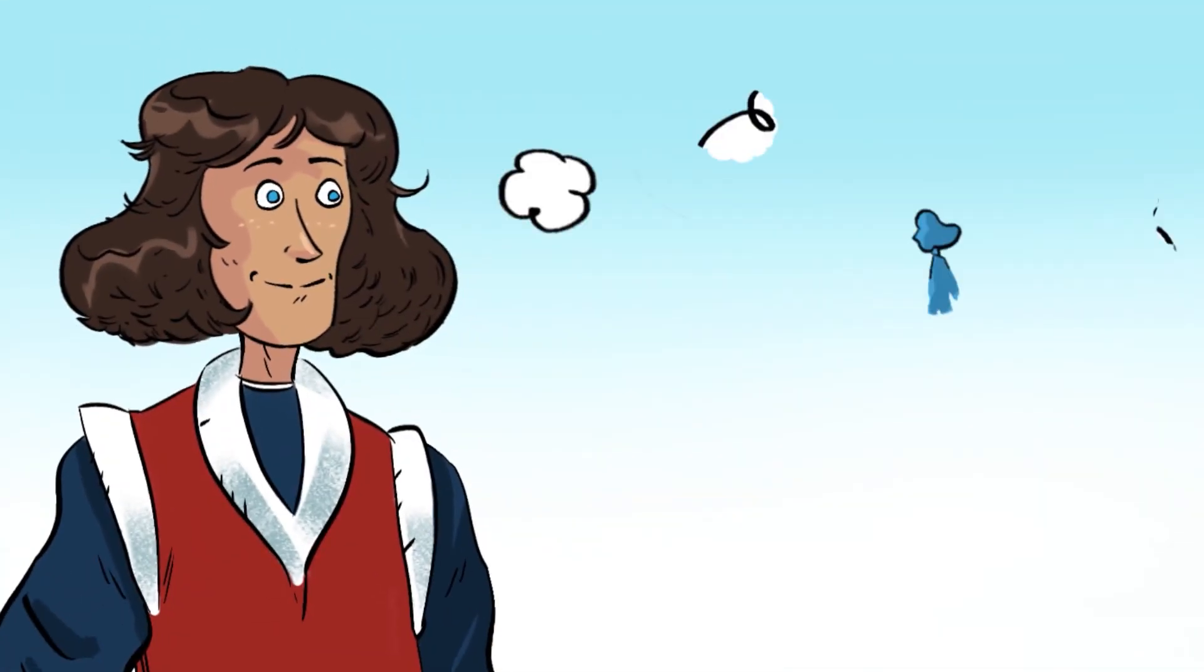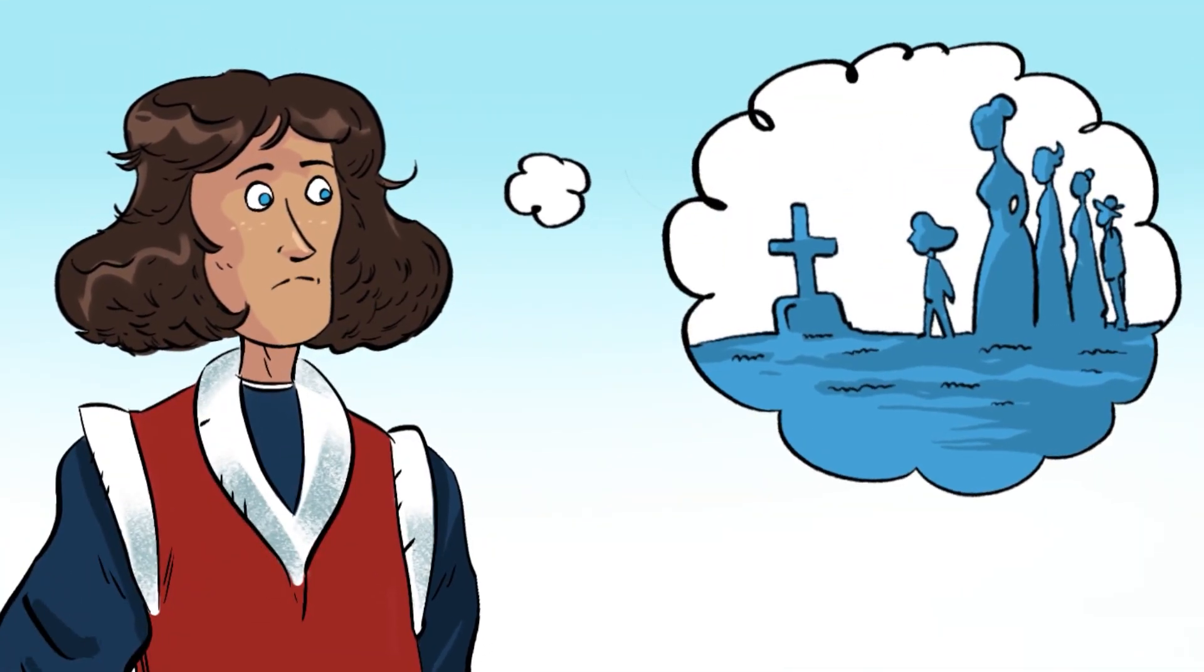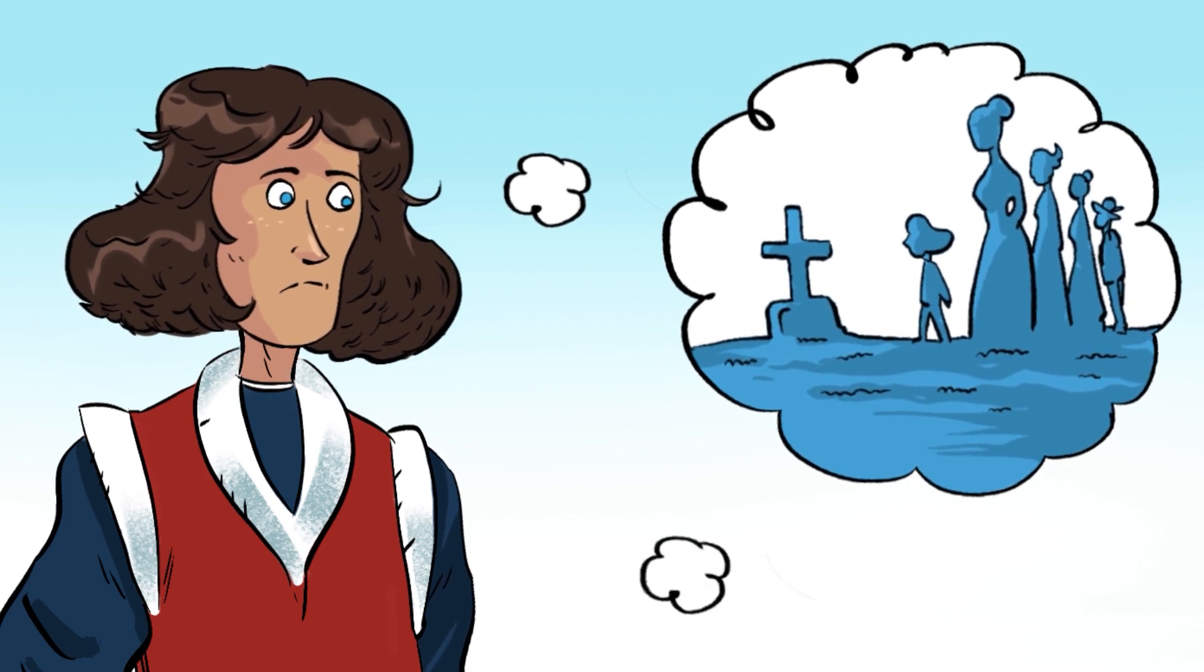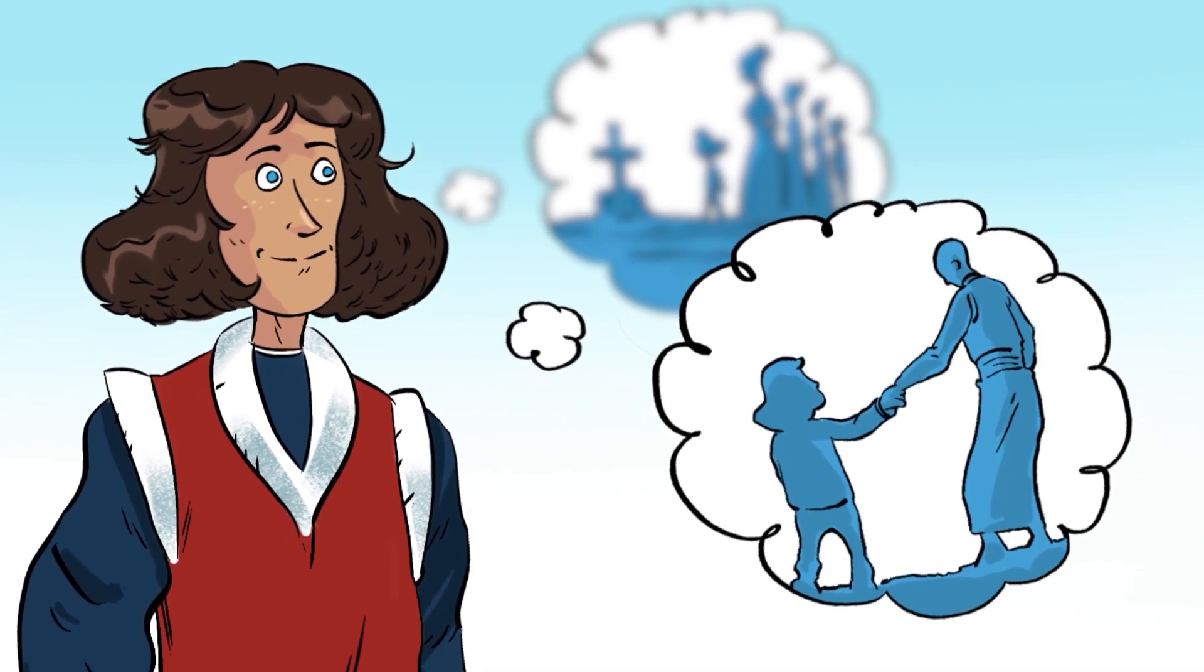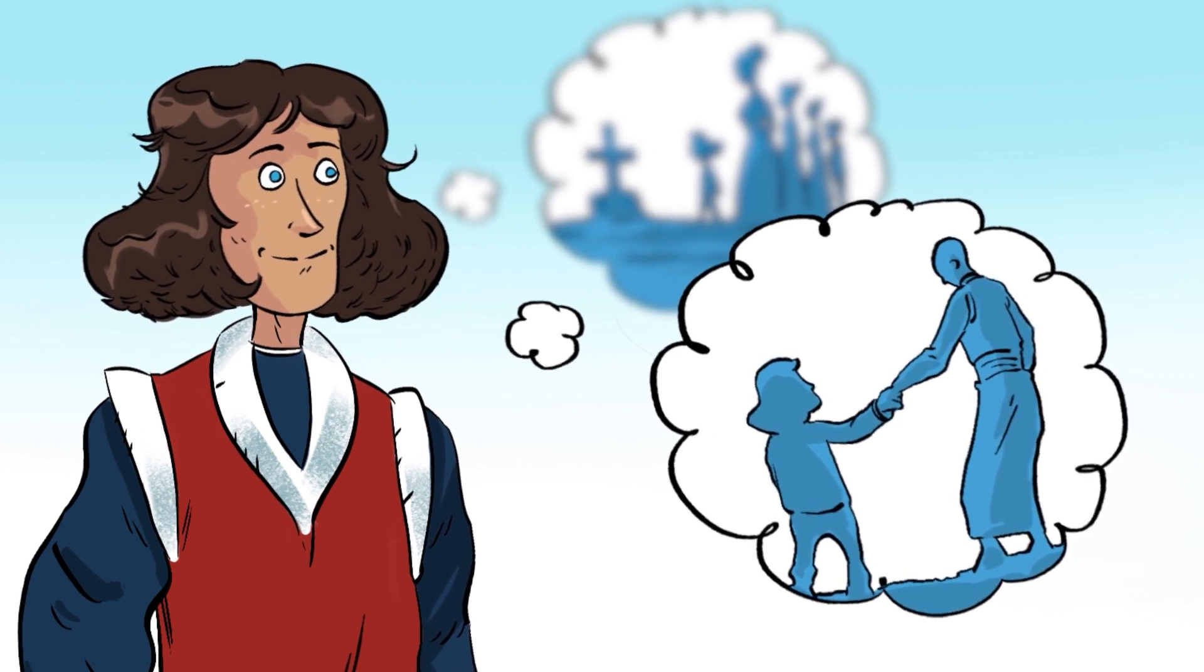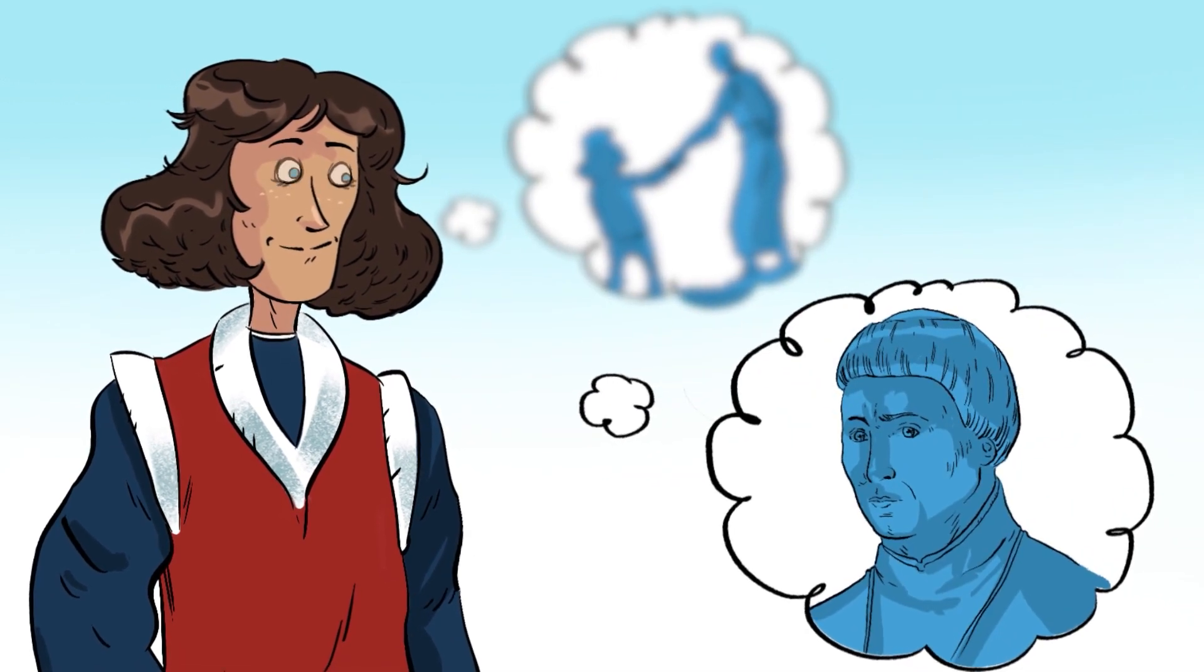When Nicolaus was at the age of 10, his father passed away. The orphaned boy was taken care of by his mother's brother, Lukas Watzenrode, who not long after became the Bishop of Warmia.